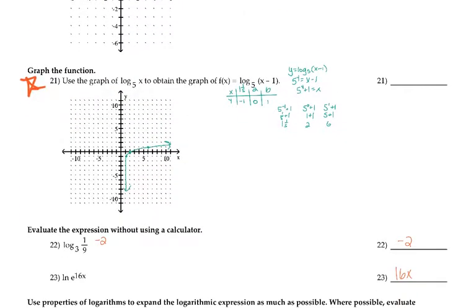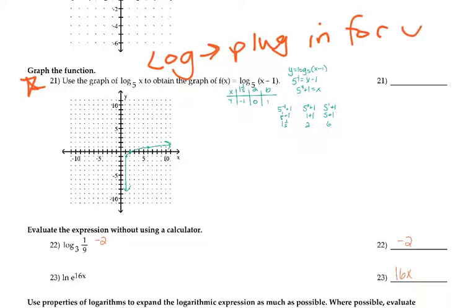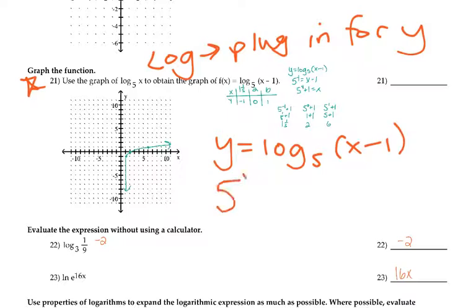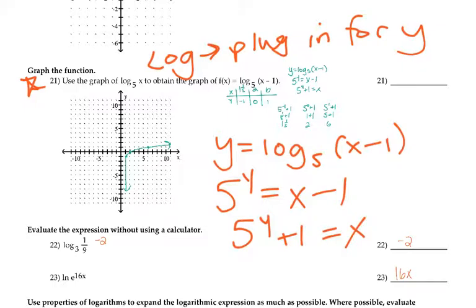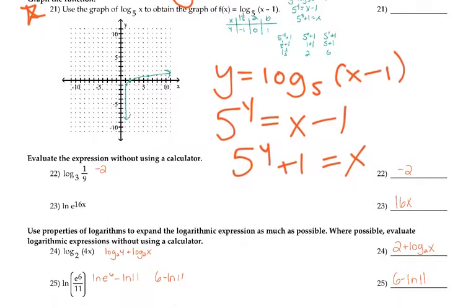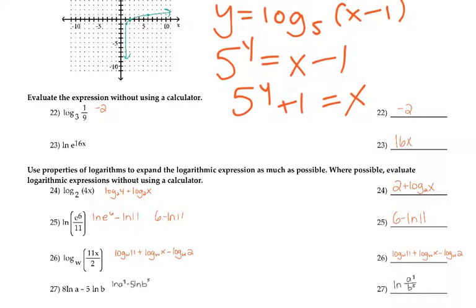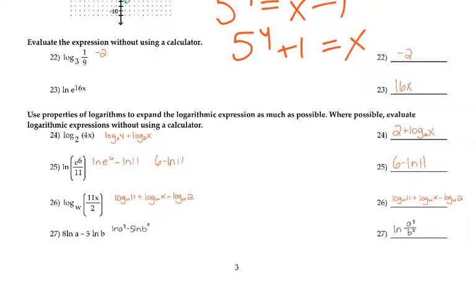Number 22: what power do you raise 3 to in order to get 1/9? That would be negative 2 — you need to square it and move it to the bottom. Number 23: ln of e — anytime you have ln of e, they cancel and leave you with the exponent. In this case it's just 16x.